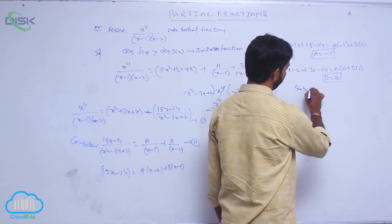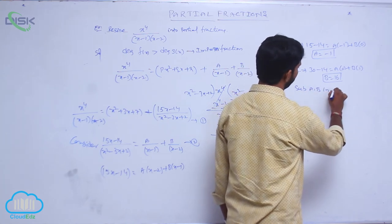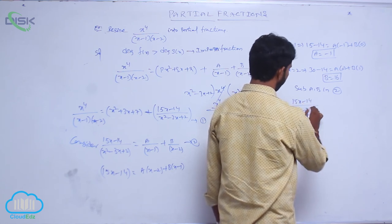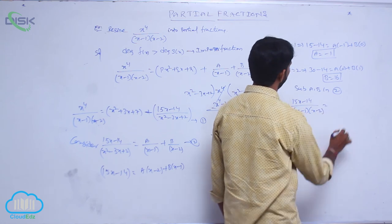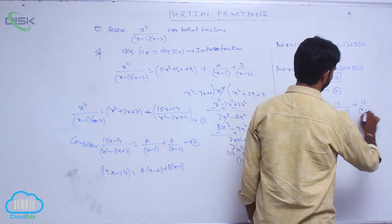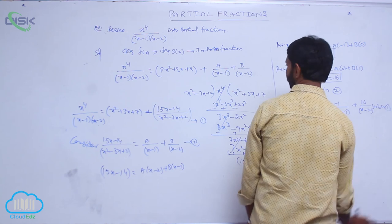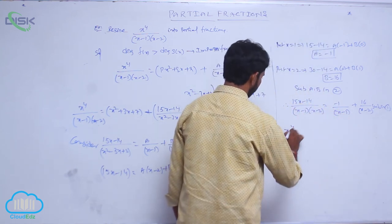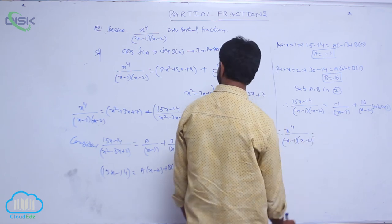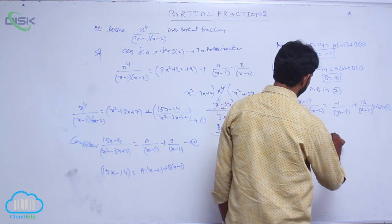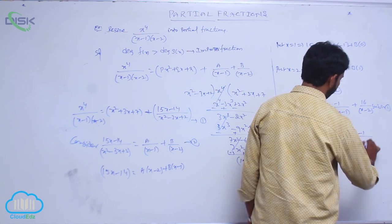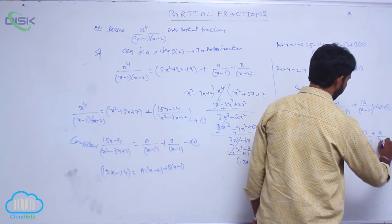Substituting A and B into condition number 2: (15x minus 14) by (x minus 1)(x minus 2) equals minus 1 by (x minus 1) plus 16 by (x minus 2). Substituting into condition number 1, therefore x to the power 4 by (x minus 1)(x minus 2) equals x squared plus 3x plus 7, minus 1 by (x minus 1), plus 16 by (x minus 2).